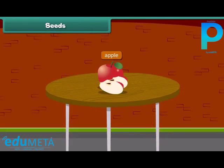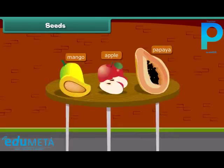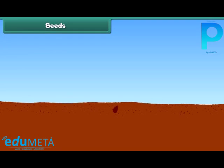When we cut an apple, what do we see at the center? Yes, absolutely right. We see small dark brown seeds. Other fruits also have seeds inside them, such as papaya and mango. Do you know that a new plant grows from a seed?